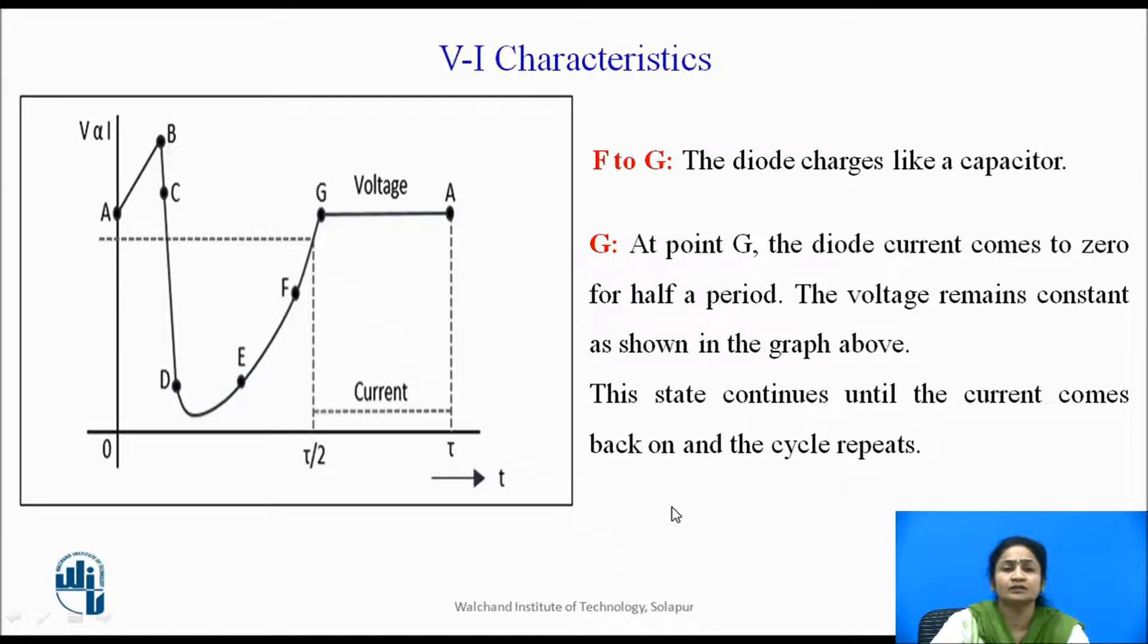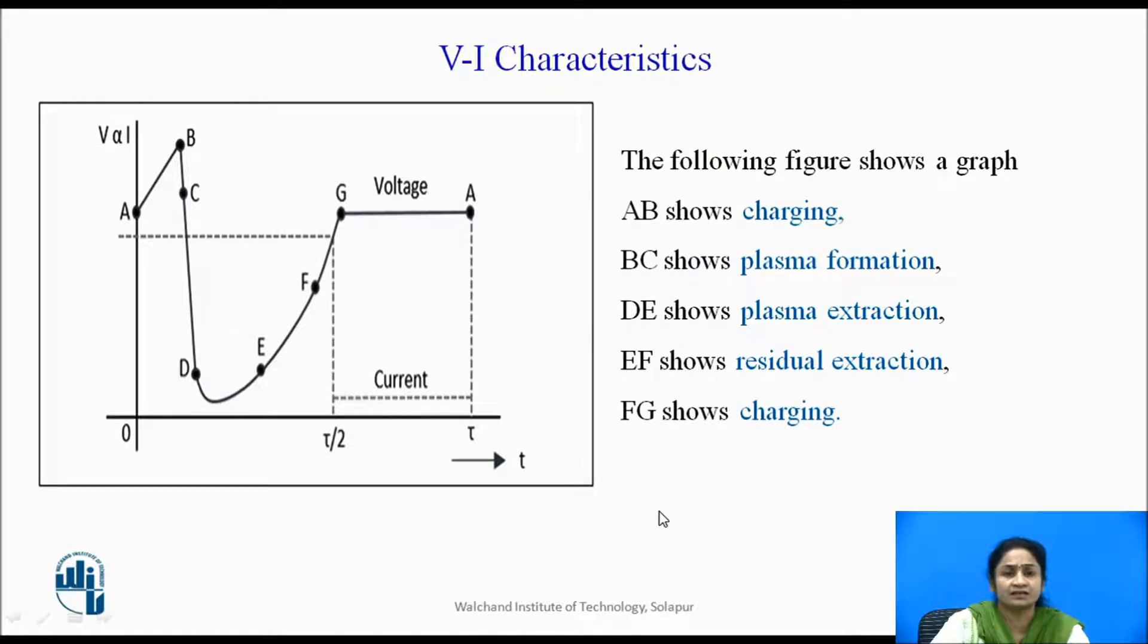This is how the working of the diode takes place. So we represent the different regions in this graph. From point A to B, we call it as charging time. From B to C, we call it as plasma formation, as there is plasma formation taking place between holes and electrons. From D to E, the plasma extraction is done. E to F, this region is known to be a residual extraction duration. And from F to G, again the diode starts charging.